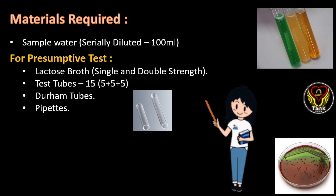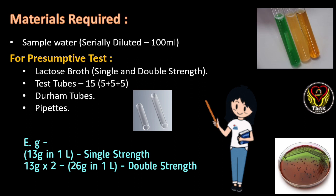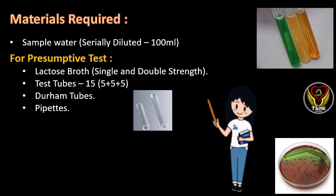The media used for the presumptive test is lactose broth, used in single and double strength. Single and double strength simply indicates the strength of the media. For example, if we add 13 grams of media in one liter of water it is single strength, and if we double that value — 26 grams of media in one liter of water — it is double strength media. We will require 15 test tubes divided into three sets, each having five test tubes. The third important material required is the Durham tube, which is used to identify gas production in the media after fermentation.